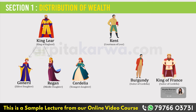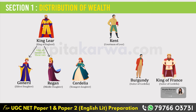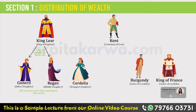Ideally, King Lear should have distributed the wealth equally, but he said that he would give his wealth to the daughter who loves him the most. Hearing this, Goneril and Regan said that they love their father more than anything in this world. King Lear, who liked people who praised him, was so happy to hear this.